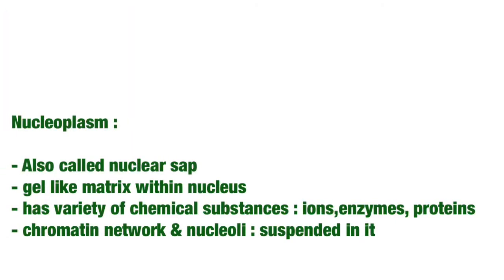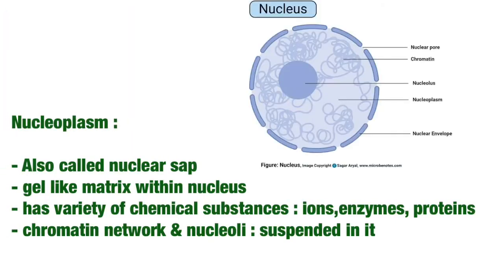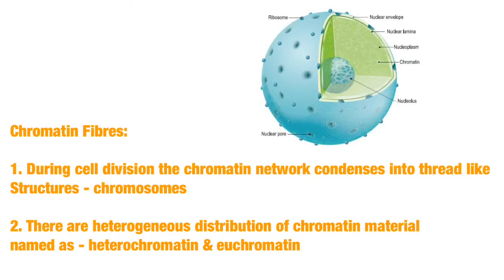The nucleoplasm, also called nuclear sap, is a gel-like matrix within the nucleus itself. It contains many chemical substances such as enzymes, proteins, nucleotides, and so on.